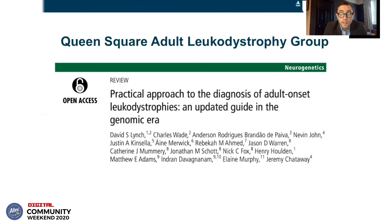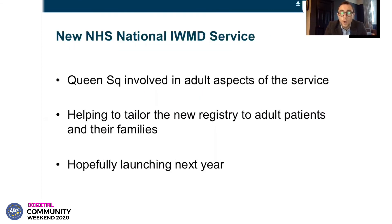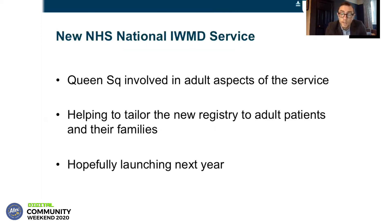We've done this now for about seven years, and we've managed to put together our own version of how we investigate patients with adult-onset leukodystrophies, which has been adopted by some other groups. We're also hopefully going to be part of the new National Inherited White Matter Disease Service. We at Queen's Square have been involved in developing the adult aspects of the service, and in particular helping to tailor the new registry to adult patients and their families, because some of the challenges adults face are different to children, and there are different implications for genetic counselling in adults. We're putting our expertise into the new national IWMD service to hopefully make it as relevant to adults as it will be for children, and hopefully that's launching next year.